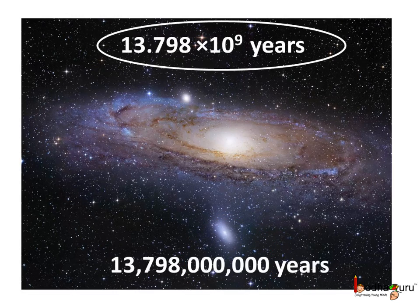Here, if we are trying to represent it in decimal notation, then the point moves by 9 places to the right as we multiply by 9 tens. So we can say the age of this universe is almost 13.798 multiplied by 10 to the power 9 years.